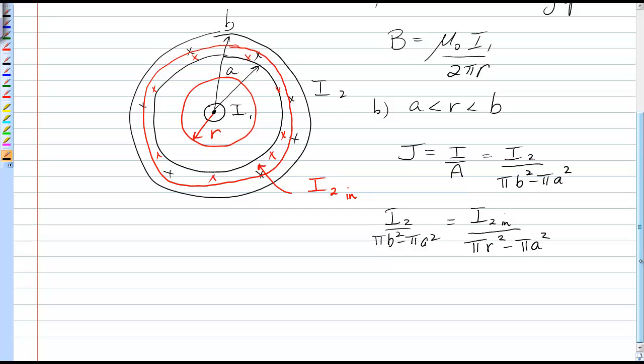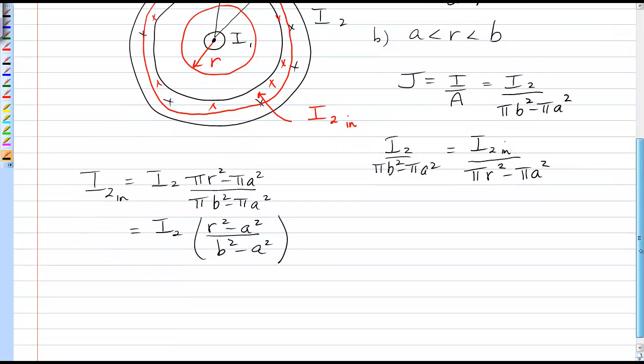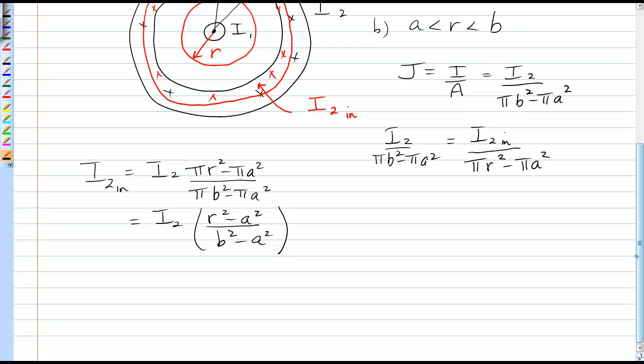And so to get the proportion of I2 that's in that Amperian circle, it's equal to the total I2 times pi r squared minus pi a squared divided by pi b squared minus pi a squared. And we may as well get rid of all those pi's. So it's I2 times the ratio of r squared minus a squared over b squared minus a squared. Okay, that's the portion of I2 that's in our Amperian circle.